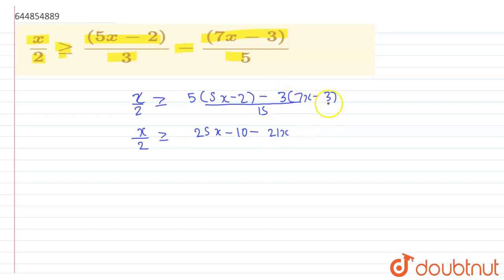So 21x, minus minus becomes plus, 3 times 3 is 9, so plus 9, upon this value which is 15.